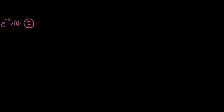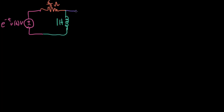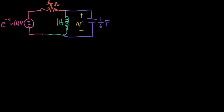We have a voltage source whose voltage is actually time varying — it's e to the minus t, u(t) volts. Then we have a six-fifths ohm resistor. That's not a very realistic resistance value, so you can tell the designers of the problem are setting this up to try to make the answers come out nicely. There's a 1-Henry inductor and a capacitor with capacitance of one-sixth farad.